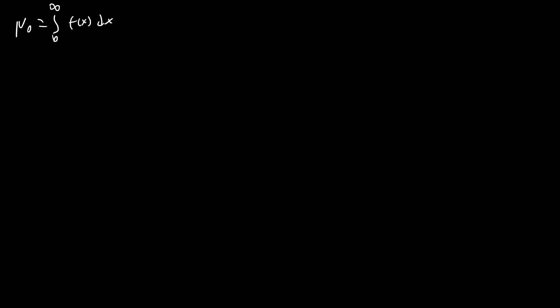First off, we're defining μ₀ as just the integral from zero to infinity of f(x) dx. We don't know what this is because we don't have an explicit formula for f(x), so we're just going to leave it as that. Next we are going to try to get an expression for μ(n+1). Something that we immediately notice is we are given a direct formula for f'(x) in terms of f(x).